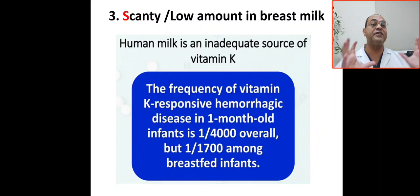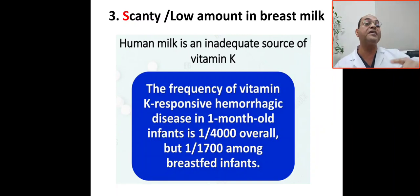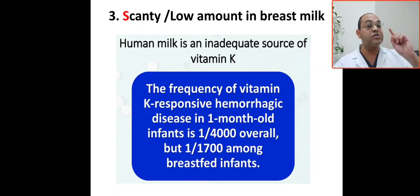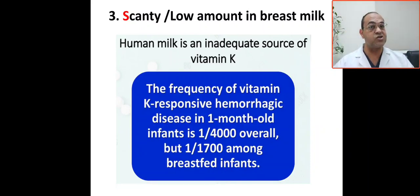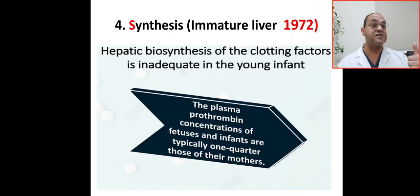The third factor is the scanty and low amount of vitamin K in breast milk. The frequency of vitamin K deficiency responsible for hemorrhagic disease in one-month-old infants is 1 in 4,000 overall, but 1 in 1,700 among breastfed infants — so hemorrhagic disease or vitamin K deficiency is higher in breastfed infants.